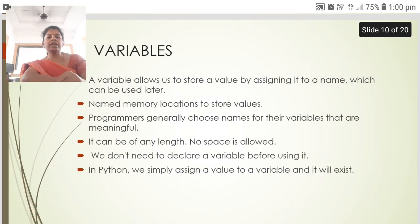The next is the variable. A variable allows us to store a value by assigning it to a name, which can be used later. Named memory locations to store values. Programmers generally choose names for their variables that are meaningful. It can be of any length. No space is allowed. We don't need to declare a variable before using it. In Python, we simply assign a value to a variable and it will exist.